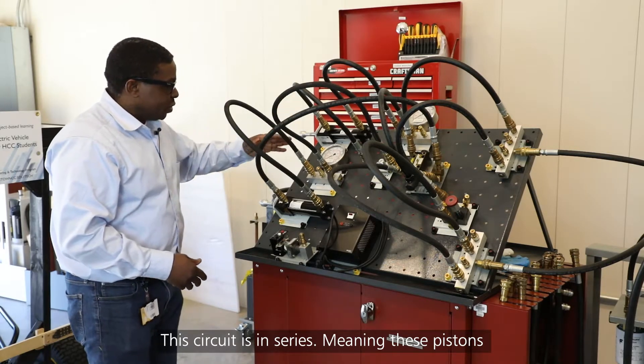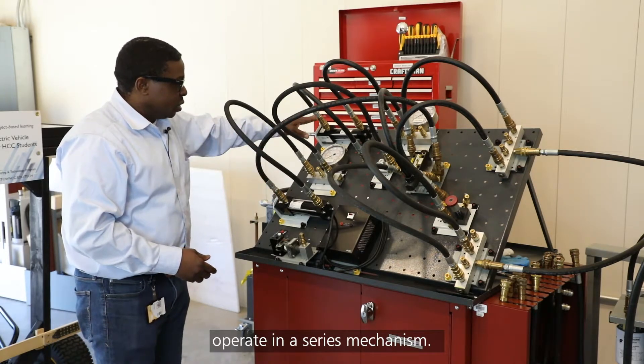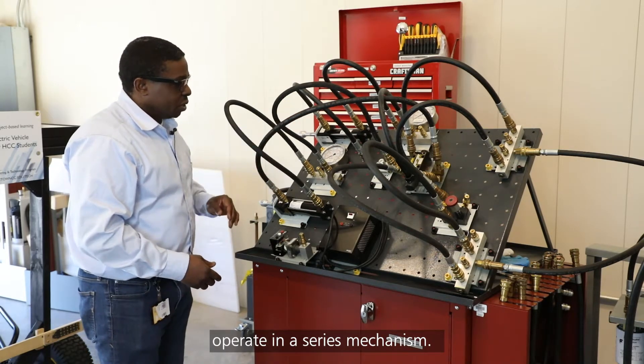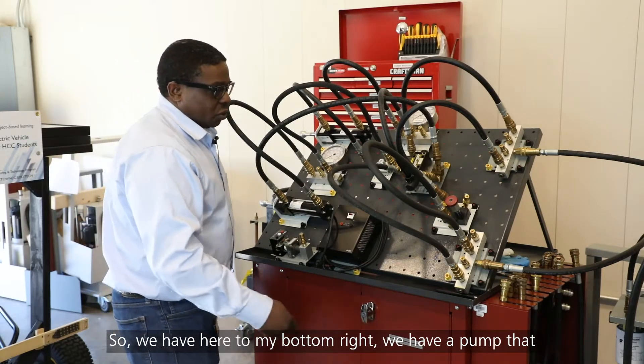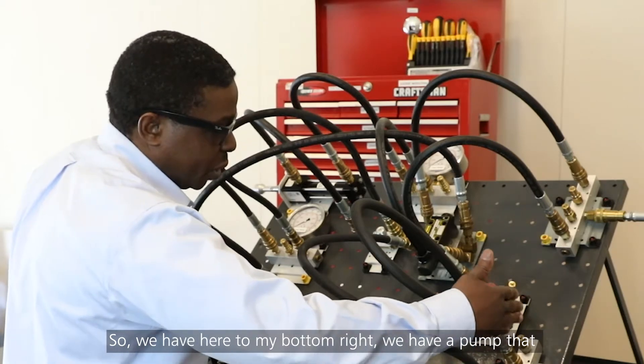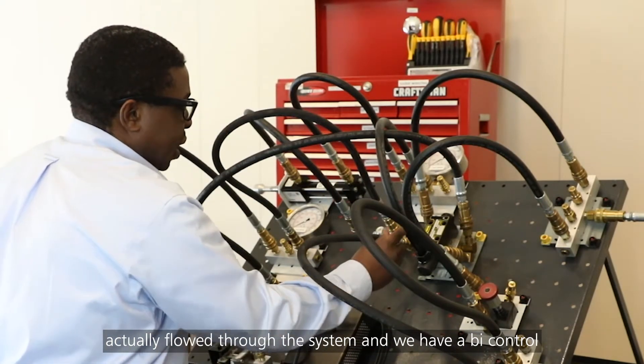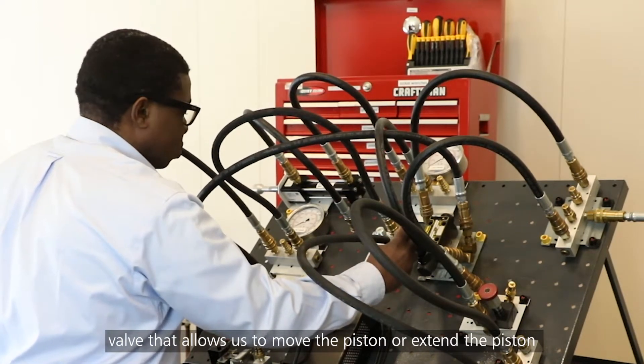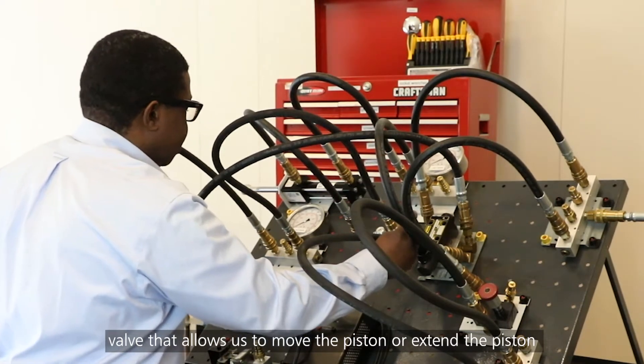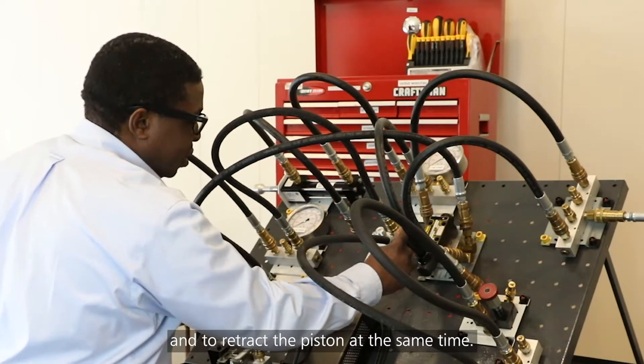Here we have, this circuit is in series, meaning that these pistons operate in a series mechanism. So we have here, to my bottom right, we have a pump that is actually flowing through this system. And we have a bi-directional control valve that allows us to move the piston or extend the piston and retract the piston at the same time.